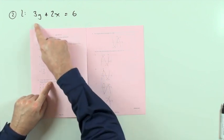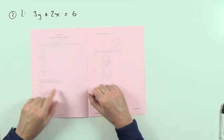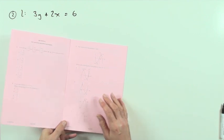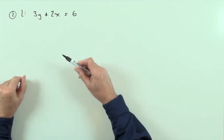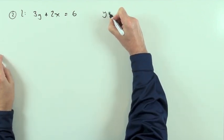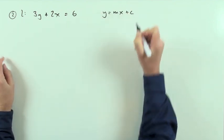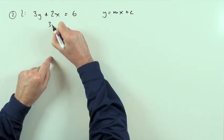Number two: a line has got this equation, what's the gradient of any line that's parallel to it? It'll be parallel to it if it's got the same gradient, but you can't get the gradient straight away from that. You need to get into the form of y = mx + c, so rearrange it to y equals.